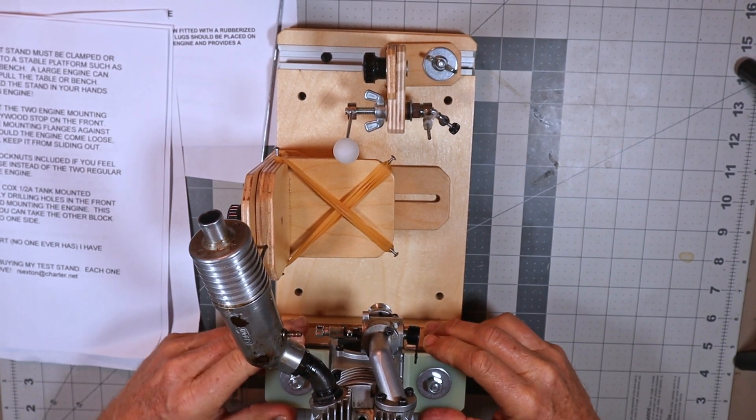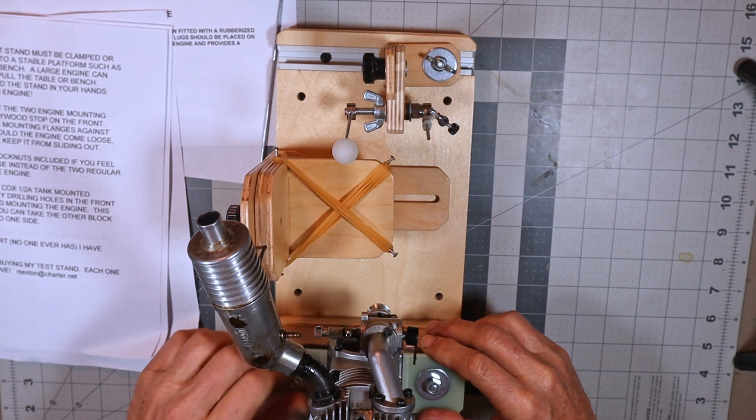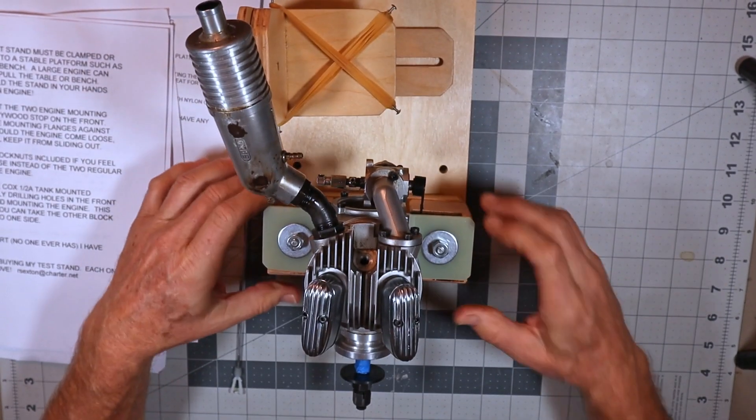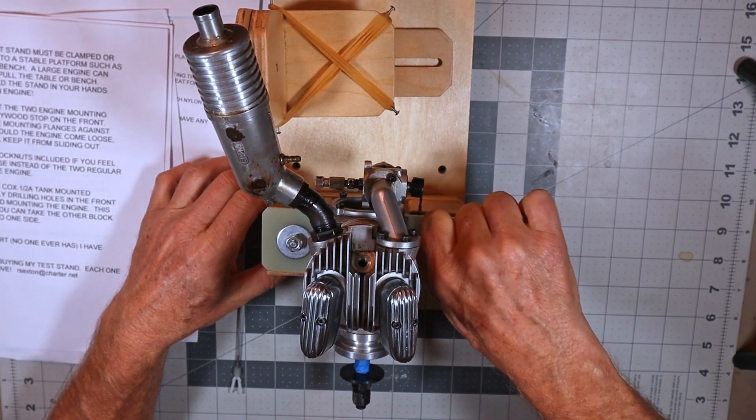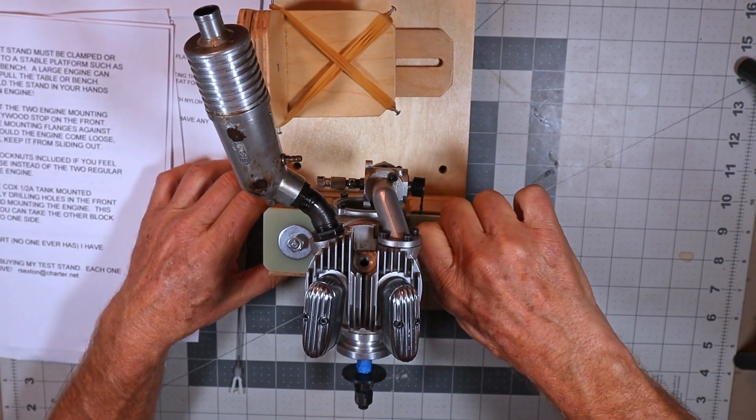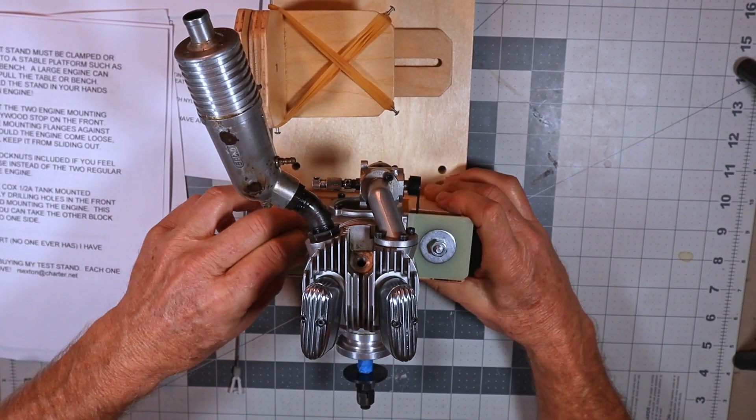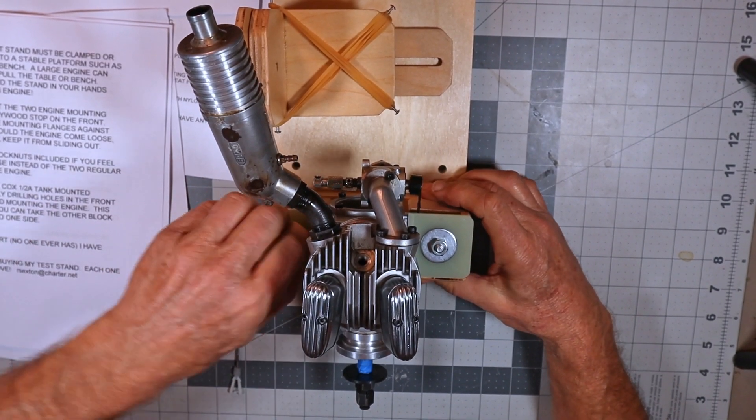So I just wanted to kind of throw my FA 220 on here real quick. It says it can go up to two cubic inches.